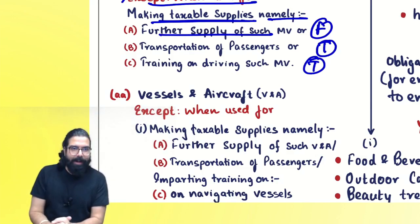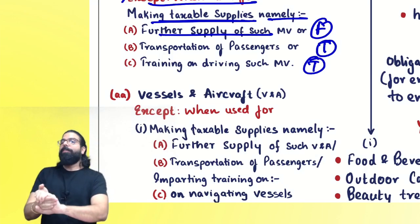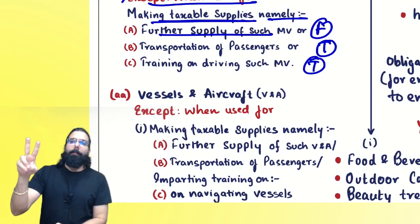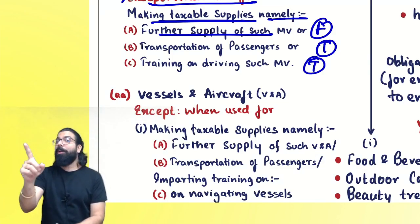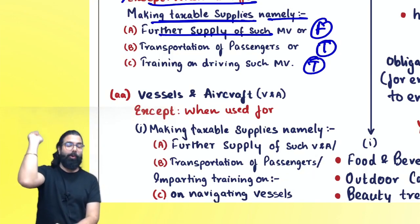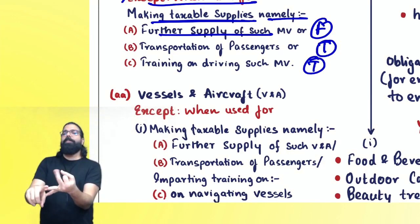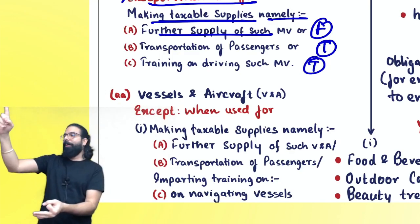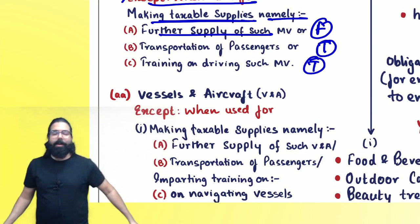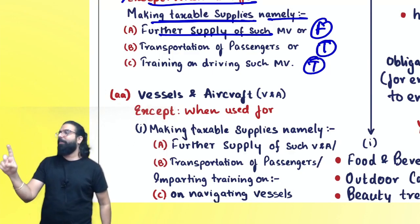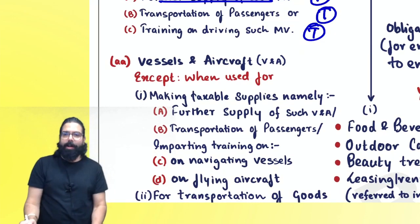Exception — credit will be ALLOWED for motor vehicles (≤13 seats) if used for: F — Further supply (buying a car to sell cars); T — Transportation of passengers (using car for passenger transport service, making money); T — Training (driving school). Remember: FTT — Further supply, Transportation of passengers, Training.